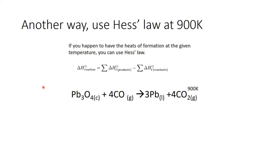We just worked through calculating the heat of reaction for this reaction at 900 K by going through a cyclic process. The simpler way to do it is if you have the heat of formation for all components at the given temperature — in this case, 900 K — you can simply work it out by applying Hess's law directly at that temperature.